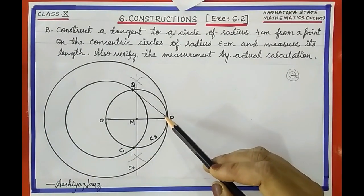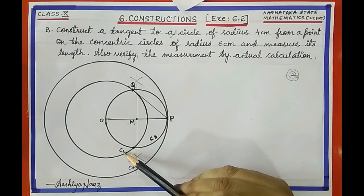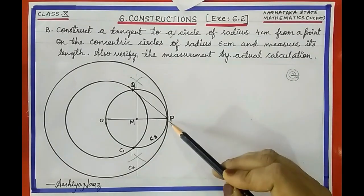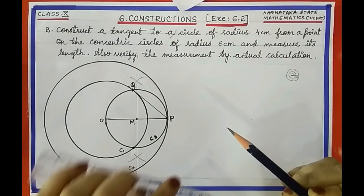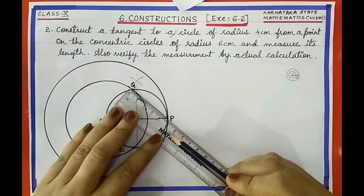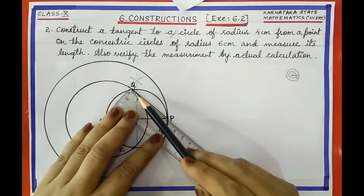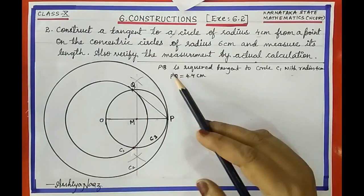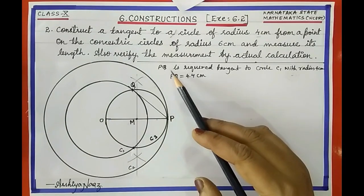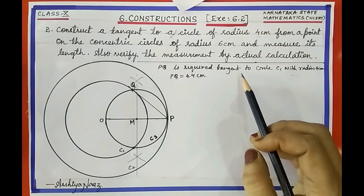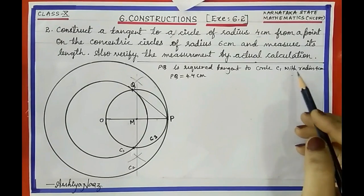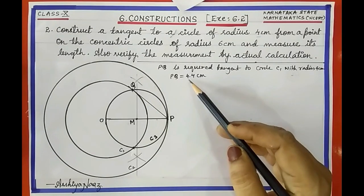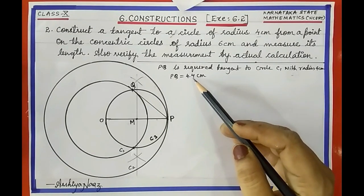PQ is a tangent to circle C1 from point P, which lies on circle C2. If we measure with a scale, we get the length PQ approximately equal to 4.4 cm. So PQ is the required tangent to circle C1 with radius 4 cm, and PQ ≈ 4.4 cm.